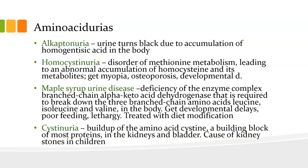Maple syrup urine disease is a deficiency of the enzyme complex branched-chain alpha-ketoacid dehydrogenase, which is required to break down all three branched-chain amino acids — leucine, isoleucine, and valine. You get developmental delays, poor feeding, and lethargy, and it is treated with diet modification.